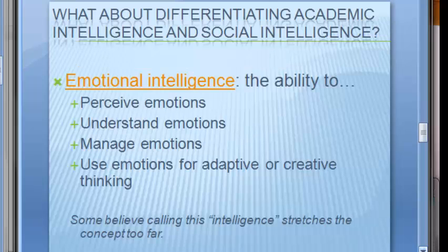Should we differentiate academic intelligence and social intelligence? One type of social intelligence that has received a lot of research and attention is emotional intelligence — the ability to perceive, understand, and manage emotions, as well as use emotions for adaptive or creative thinking. Emotionally intelligent people can sense when something's wrong, understand why, and manage their reactions. Many businesses are currently working on emotional intelligence with their employees.